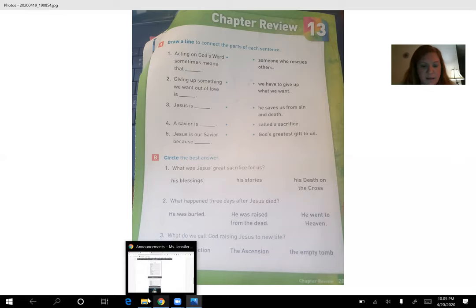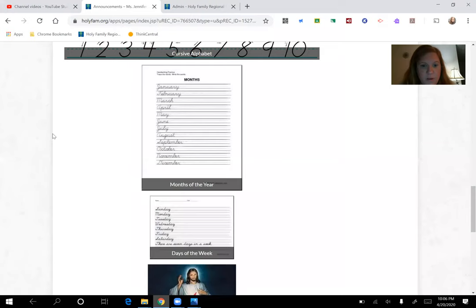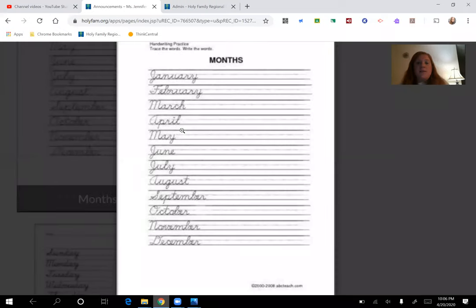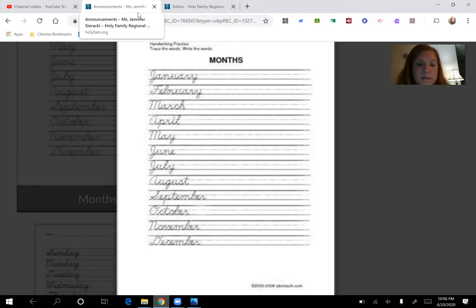Last but not least, let me pull up Edlio because I wanted to show you this cursive. So yesterday, how did you do writing January, February, March, April, May, June? So you can go if you have room on the front side of your lined paper. If you don't, you can go on the back side and you're going to practice the rest of the months. Just write them one time. If you want to write them more than one time, you can do that too. But I at least want you to practice July, August, September, October, November, and December in cursive.